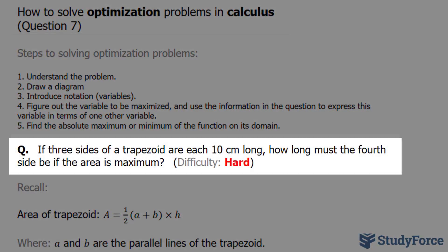The question reads: if three sides of a trapezoid are each 10 centimeters long, how long must the fourth side be if the area is to be maximized?